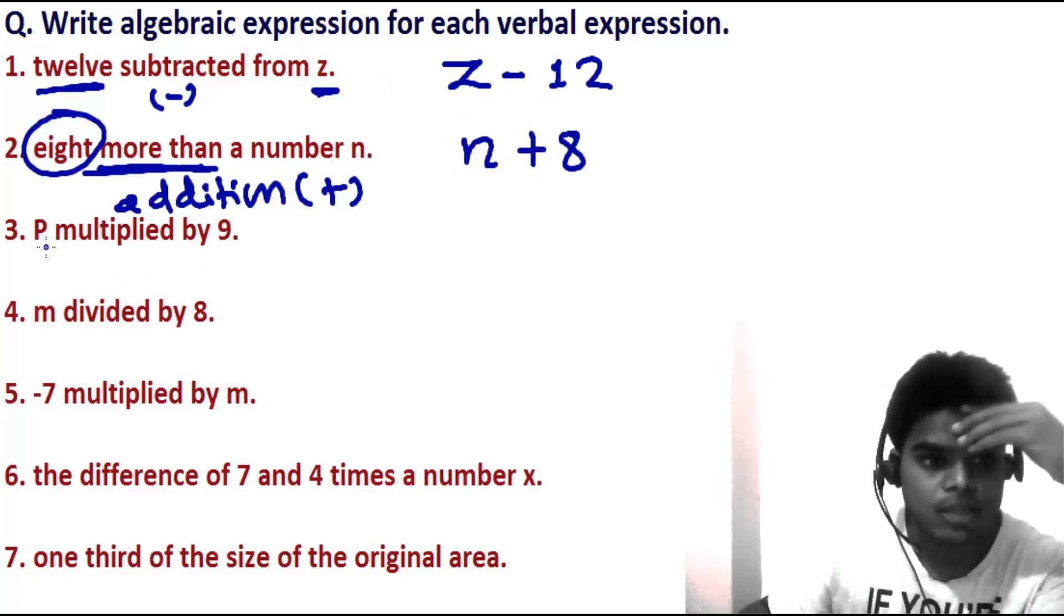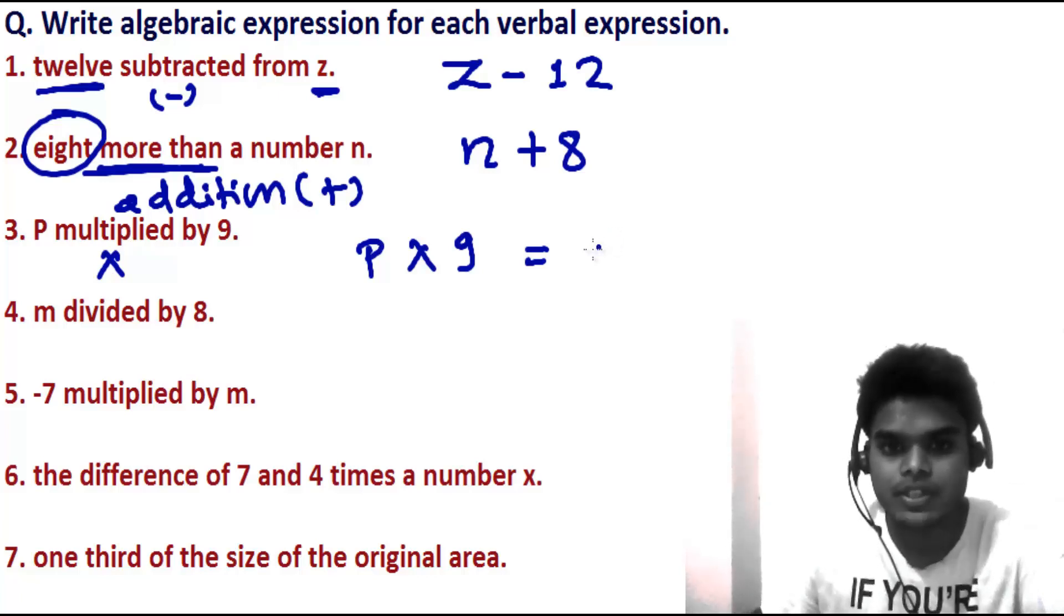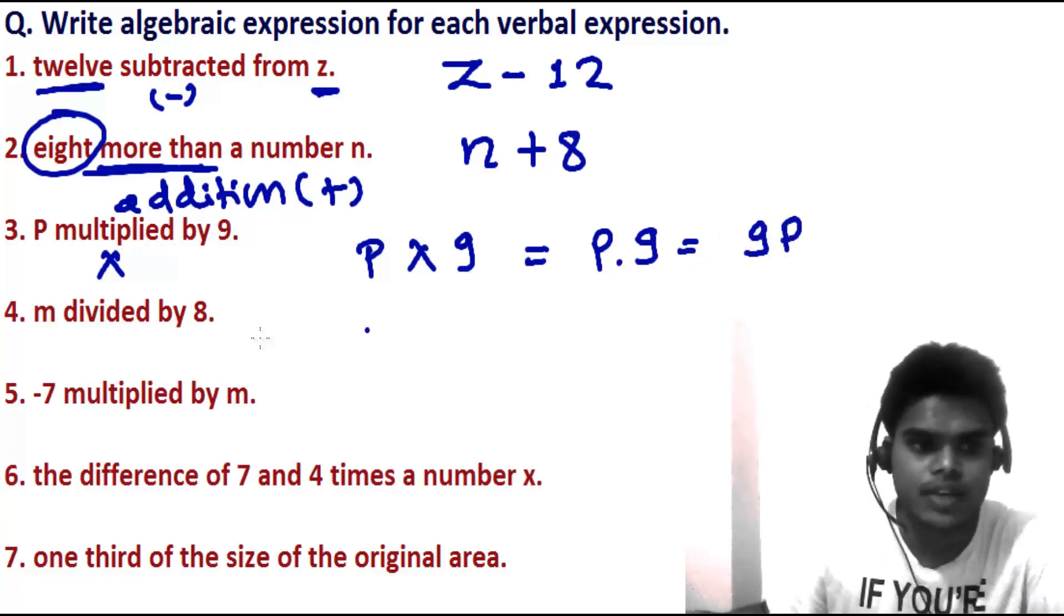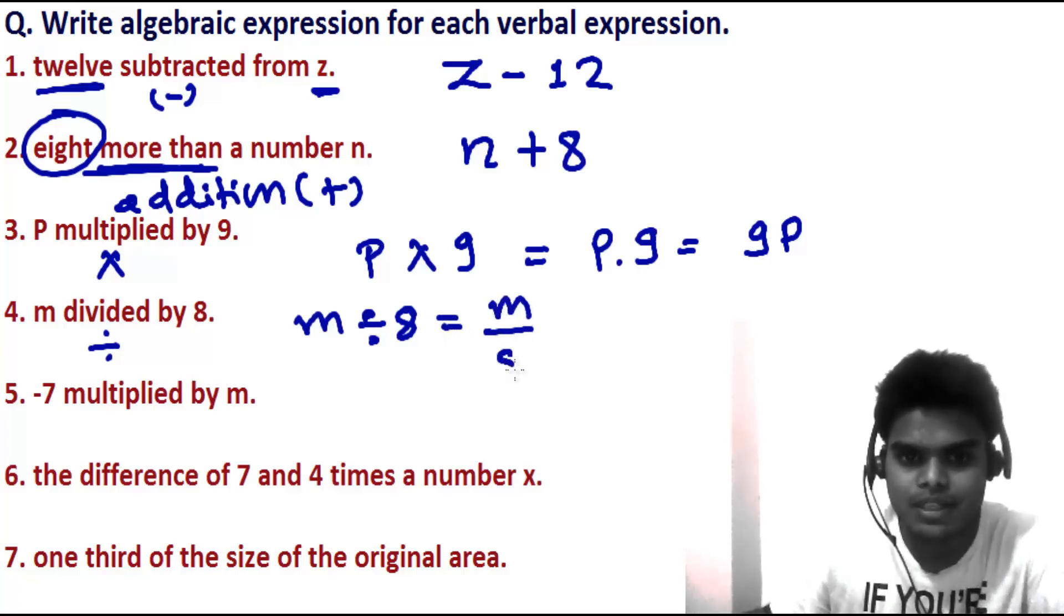Now P multiplied by 9. This is pretty simple, so P is multiplied by 9. You can write it step by step: P dot 9, and further you can write 9P together. M divided by 8, so M divided by 8, which can also be written as M over 8.